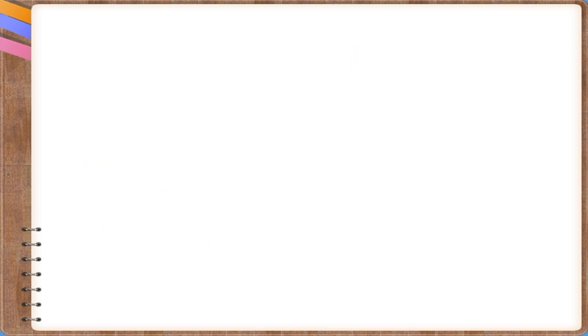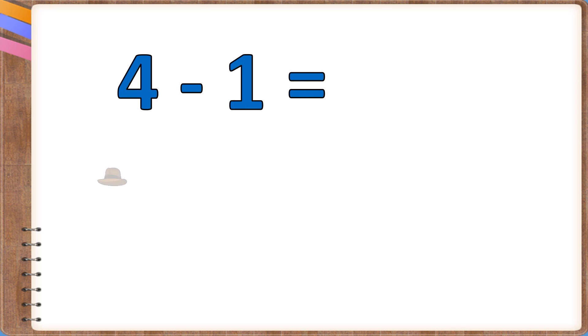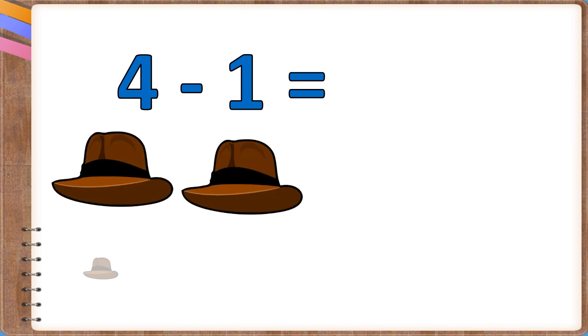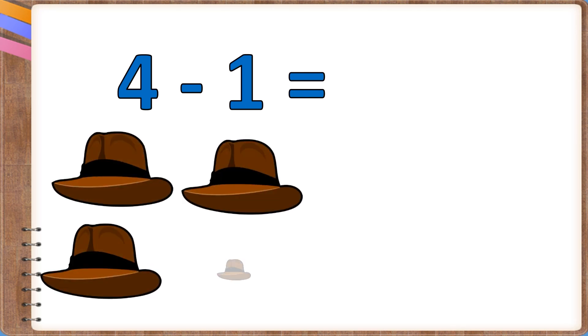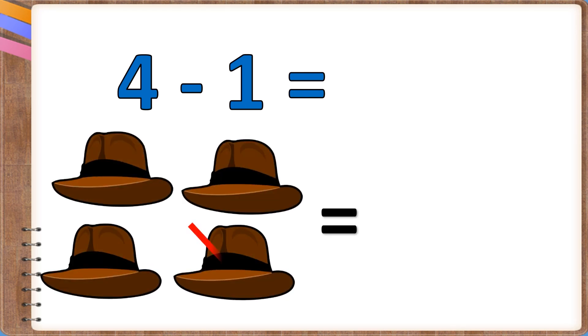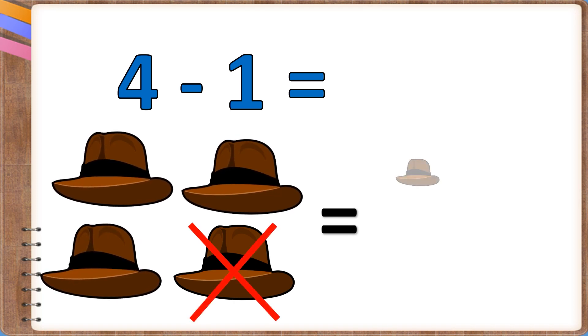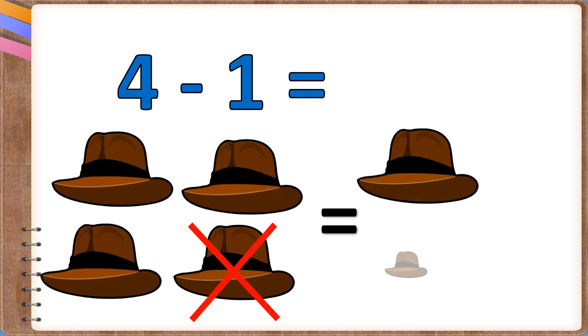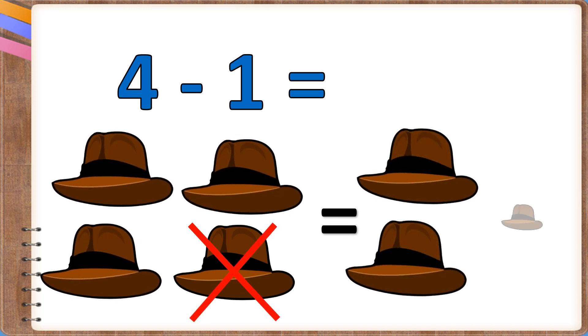4 minus 1. There were four hearts. I took away one of them. Now there are three hearts.